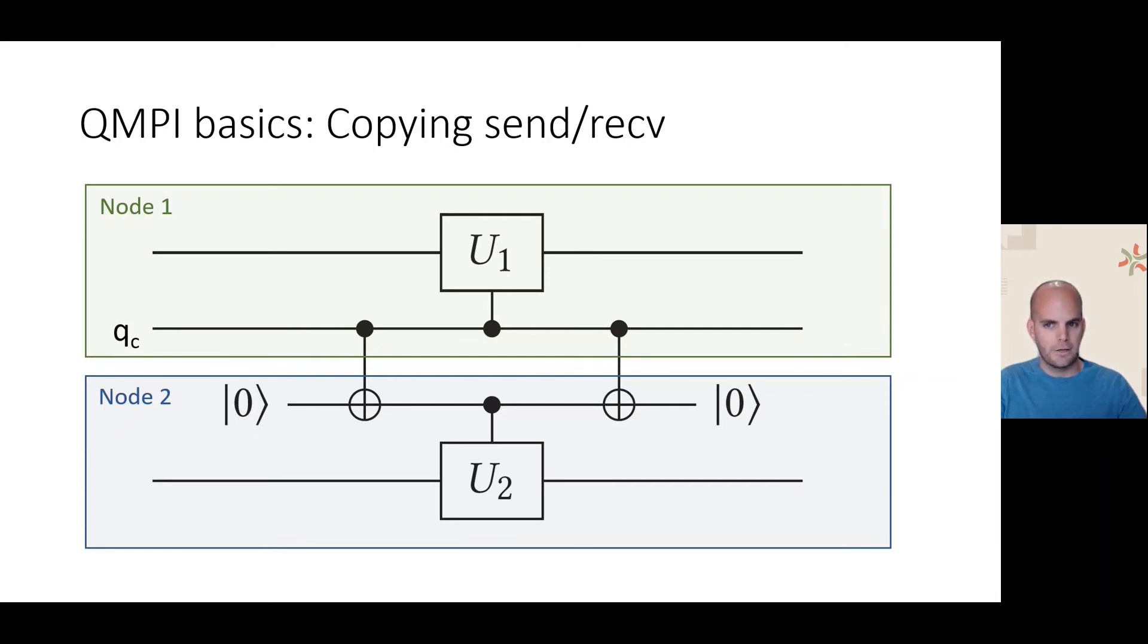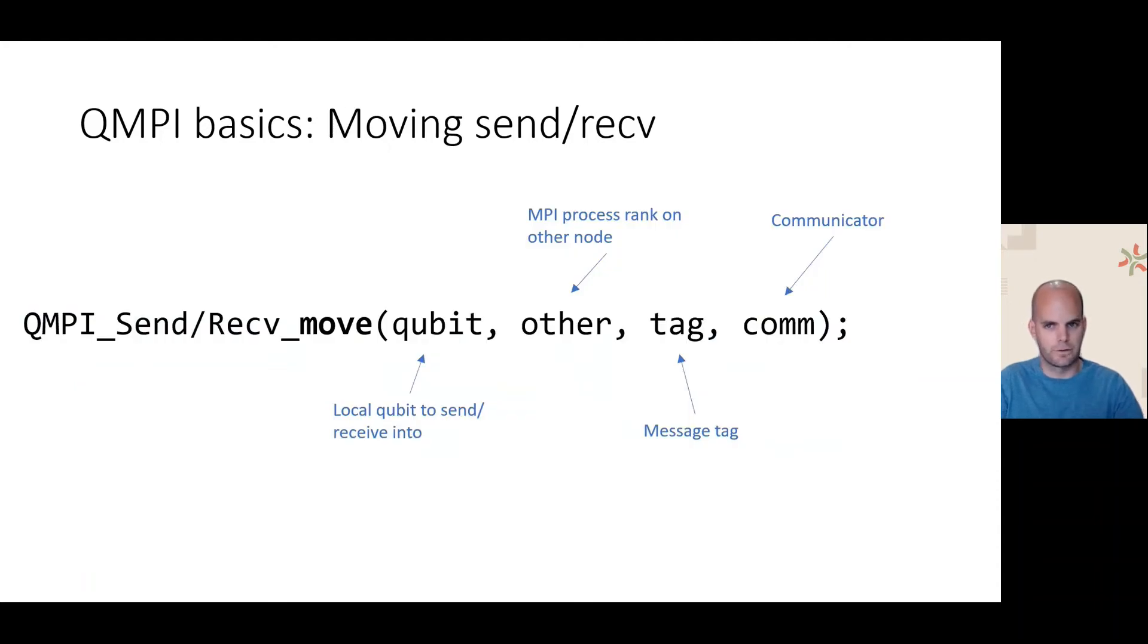However, if we want to apply general operations to a qubit, fan out is insufficient. We must actually use send and receive with move semantics instead. The function signature is exactly the same, but we just append underscore move to the function name.